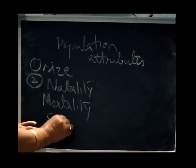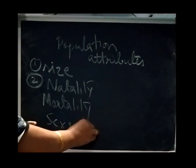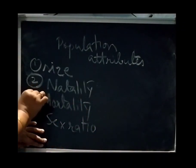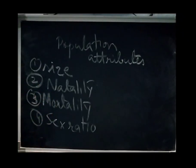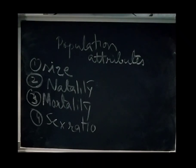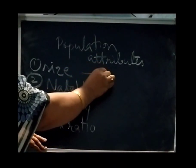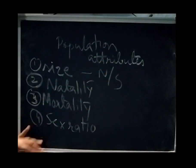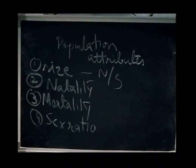Population size or density is the number of individuals of a species per unit area or volume. The formula is: PD = N/S, where N is the number of individuals in a region and S is the size of the unit area in that region.